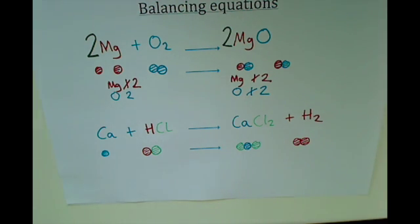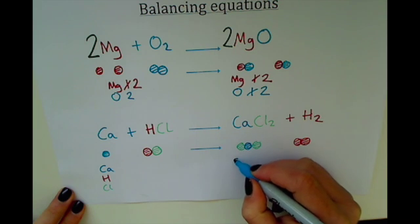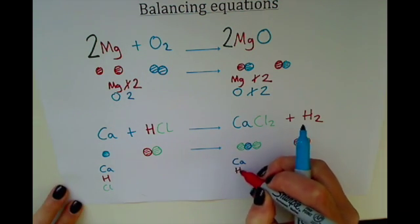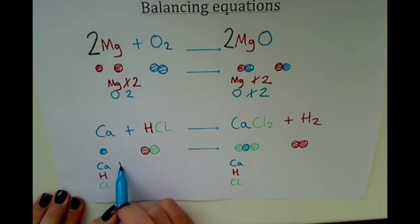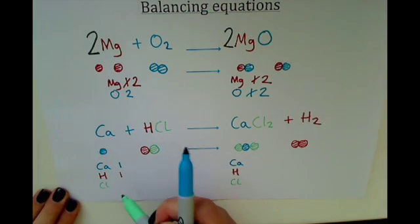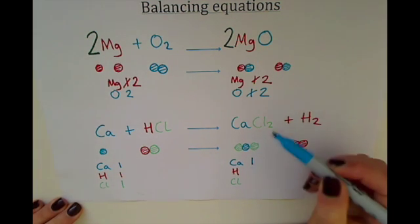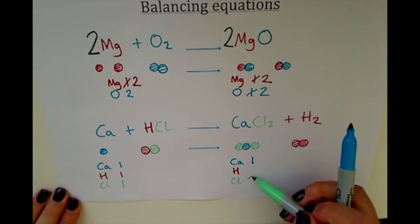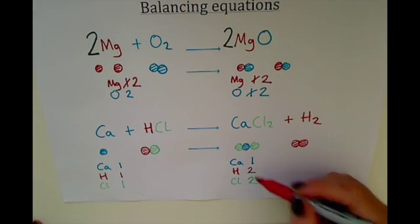Just like before, we start by listing our elements on each side — calcium, hydrogen, and chlorine. On the left we have: Ca — one, H — one, Cl — one. On the right we have: Ca — one, Cl — two, H — two. So the calcium is balanced, but the hydrogen and chlorine are not balanced, because we've got one of each on the left and two of each on the right.